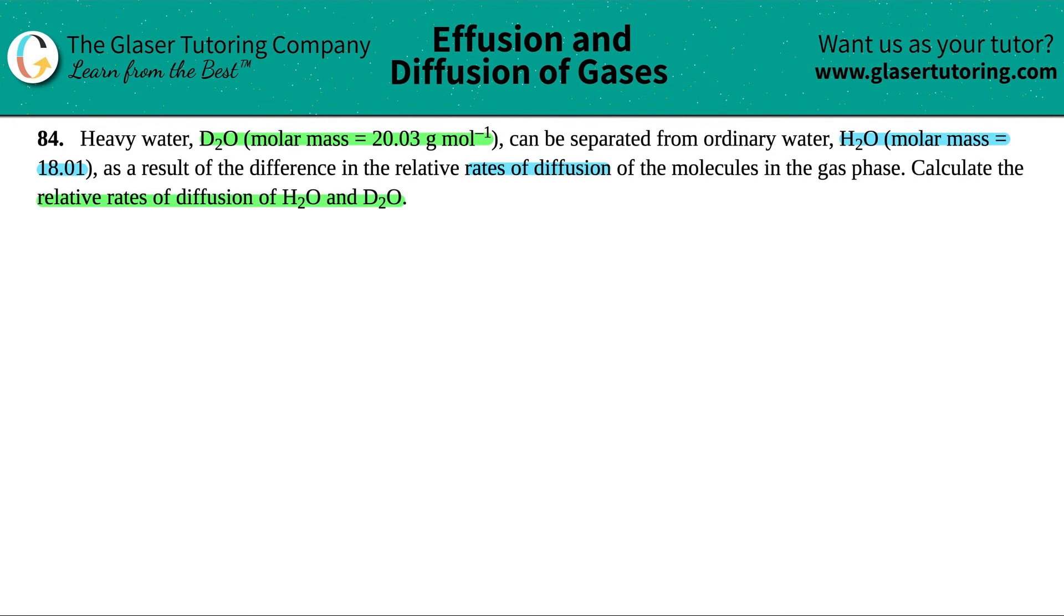Okay, so rates of diffusion. Basically, if I have a vessel, here's my lovely drawing of an Erlenmeyer flask. Let's just say that this is closed so that the gases can't go anywhere. Basically, the rate of diffusion is if you have two different gases. In this case, we do. We have H2O and we have D2O. And here they are. Let's just say that the blue is the D2O and the red is the H2O.